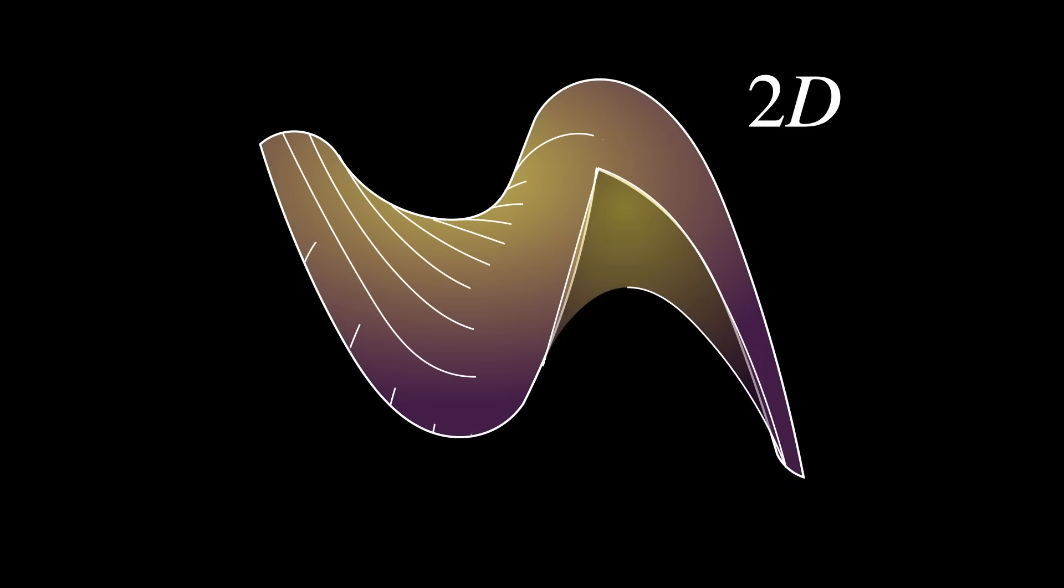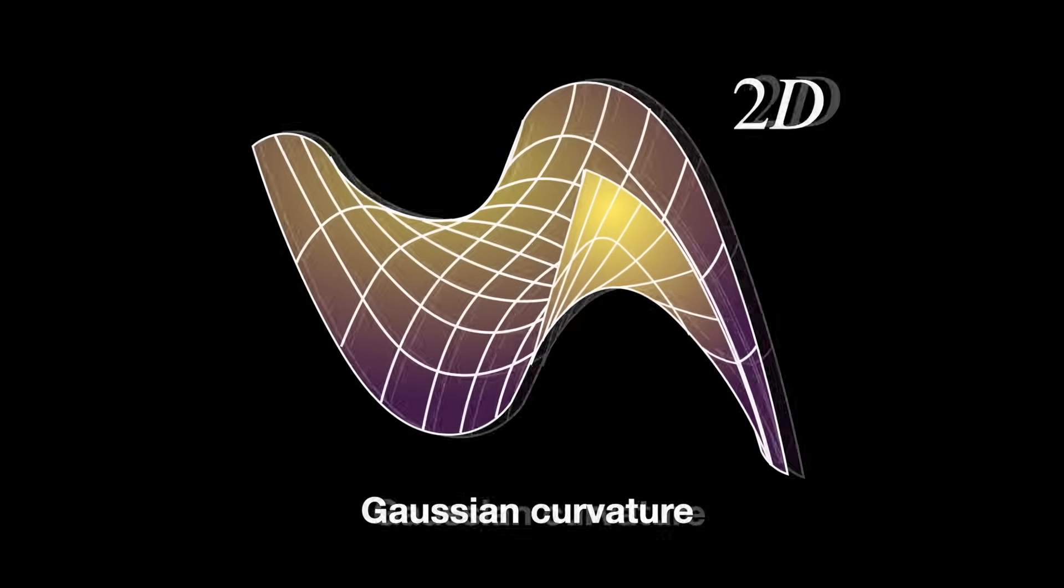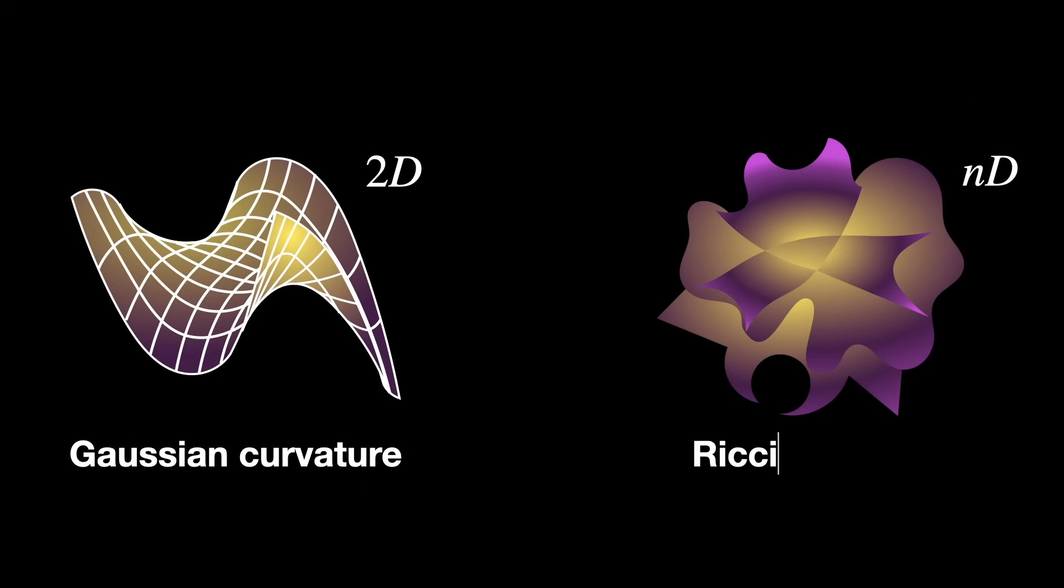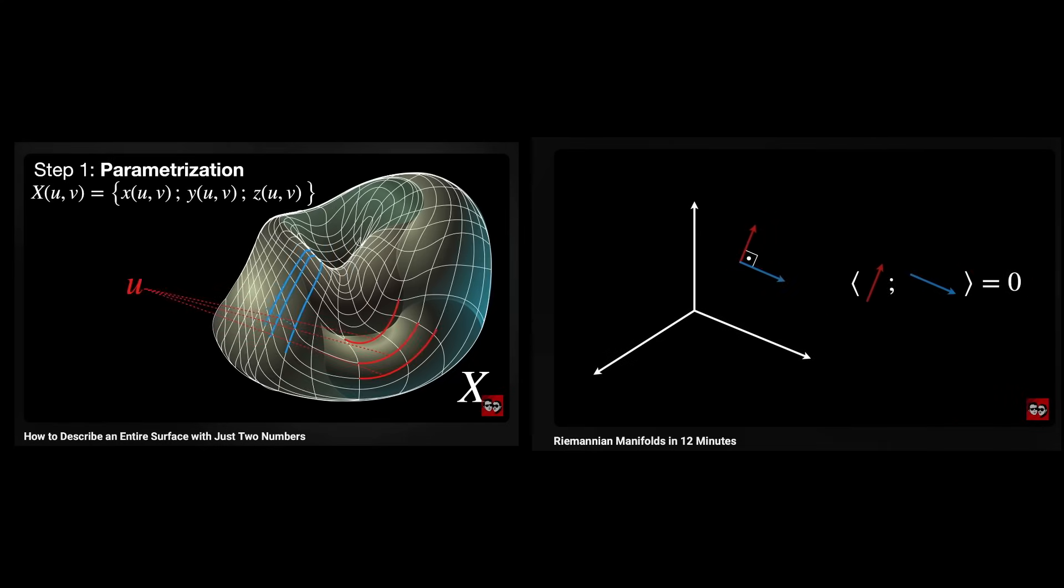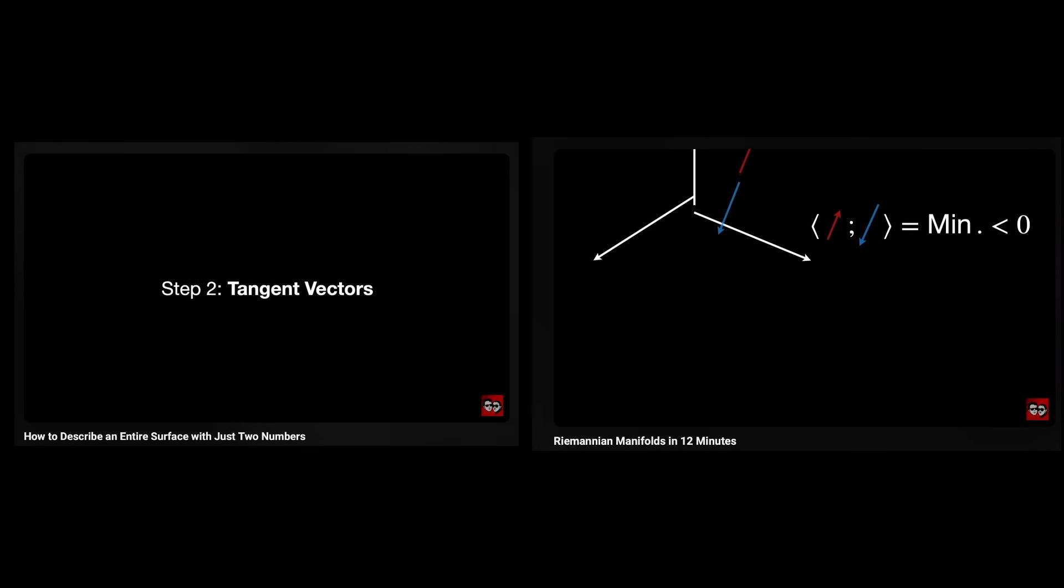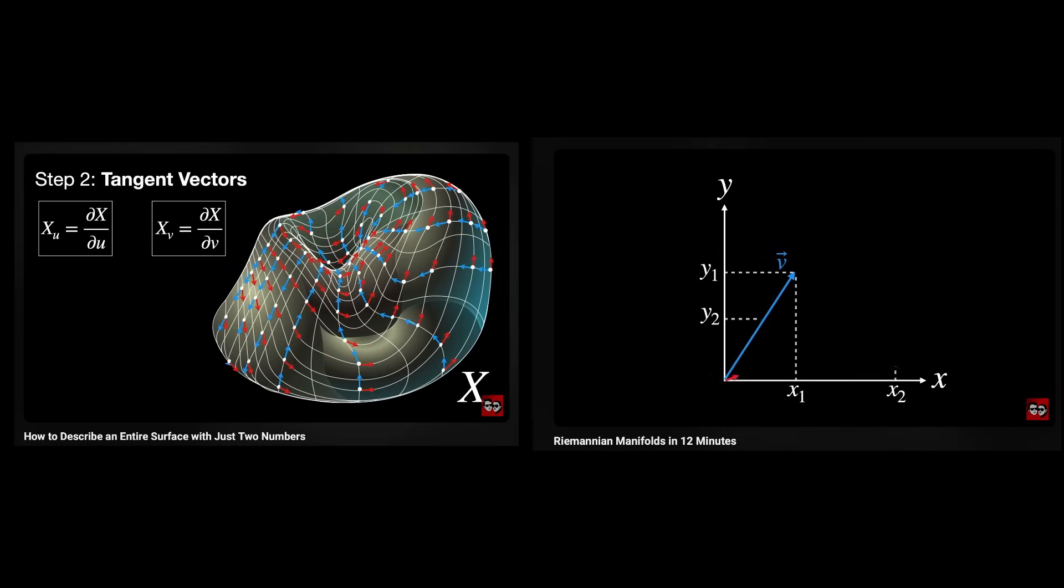Ricci Curvature is very powerful because it applies to any n-dimensional Riemannian manifold, not only to two-dimensional surfaces like the Gaussian Curvature. By the way, if you'd like to know more about these concepts, check out these videos in the channel where we dive deep into these concepts in a very clear way.